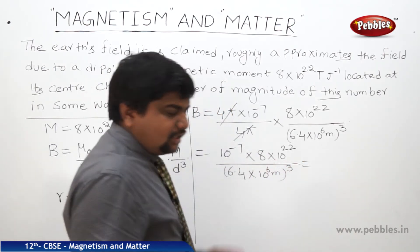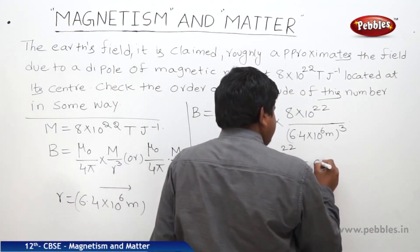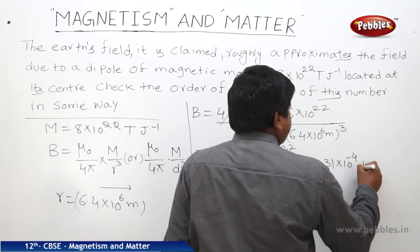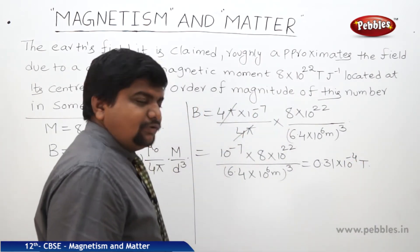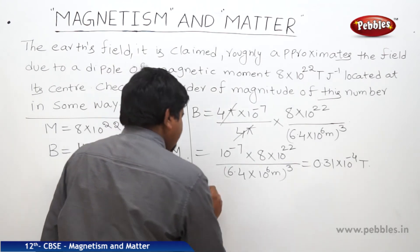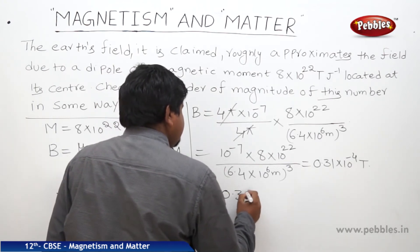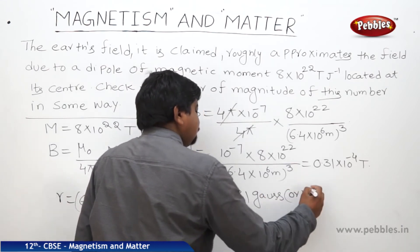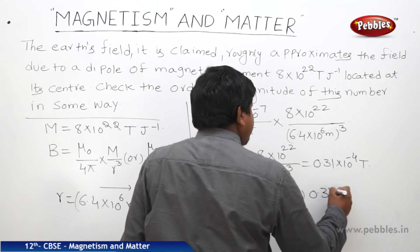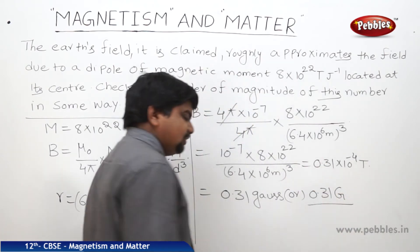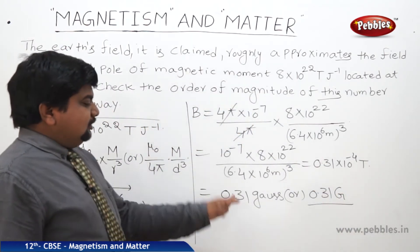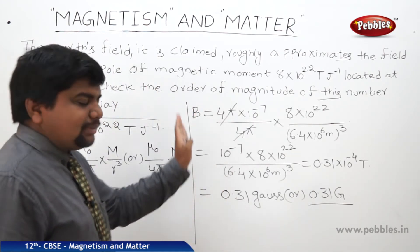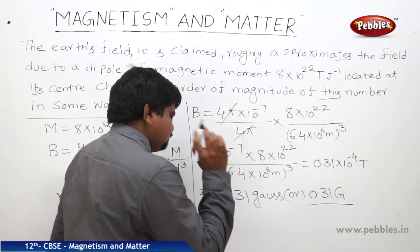Calculating all values, we get approximately 0.31×10⁻⁴ tesla, which is 0.31 Gauss (G). This value is in the order of the Earth's actual magnetic field, so we can confirm the approximation is valid.